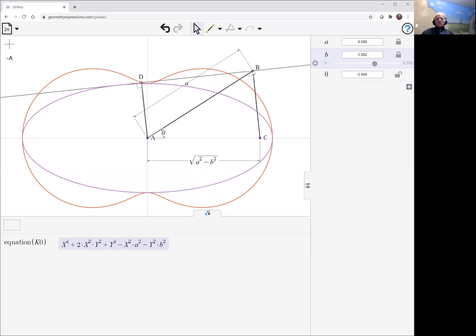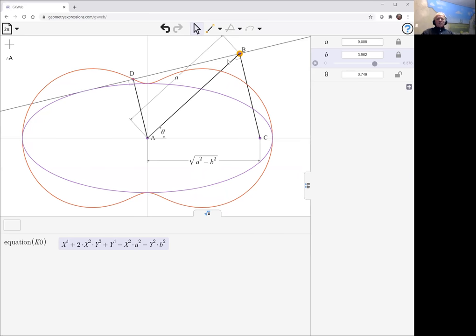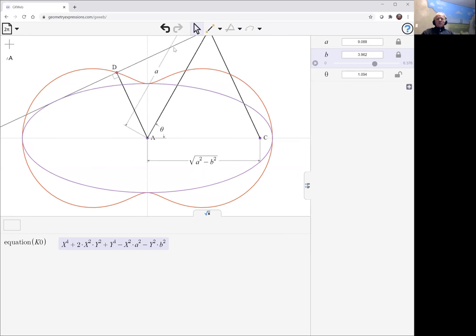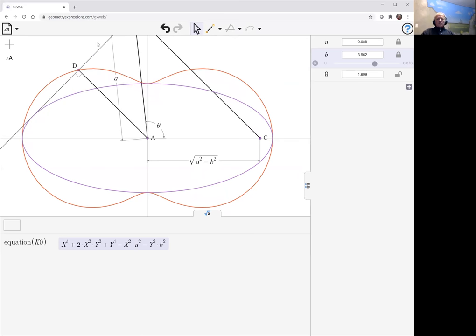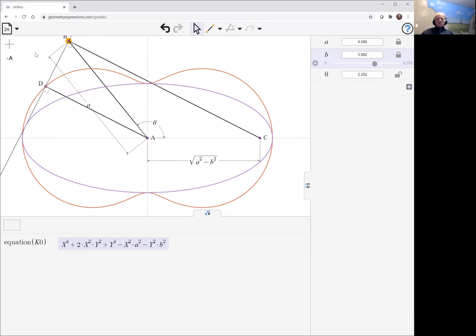So now we can see as B moves around, the line there stays tangent to the purple curve and then D is the projection of point A onto that tangent.